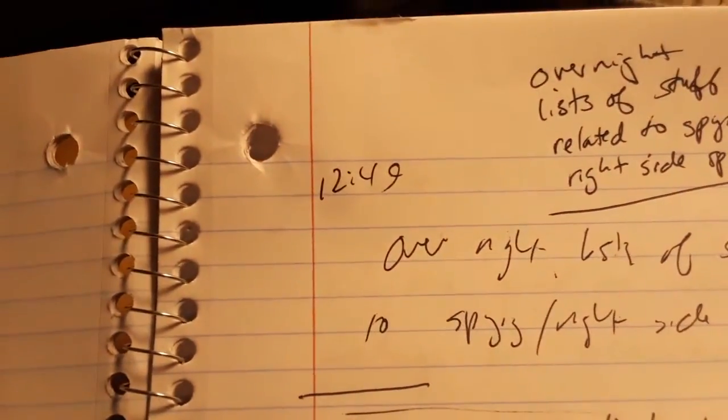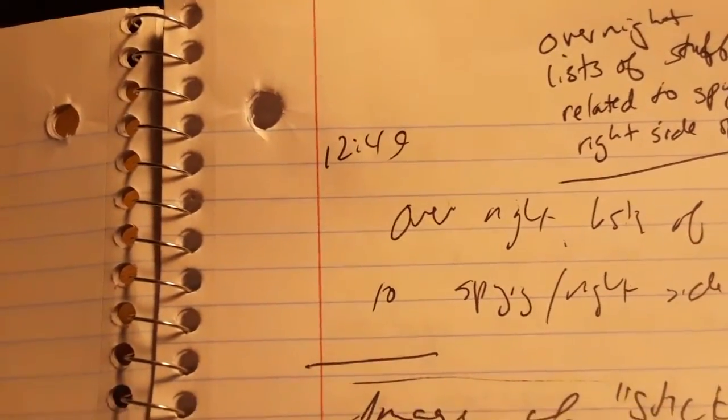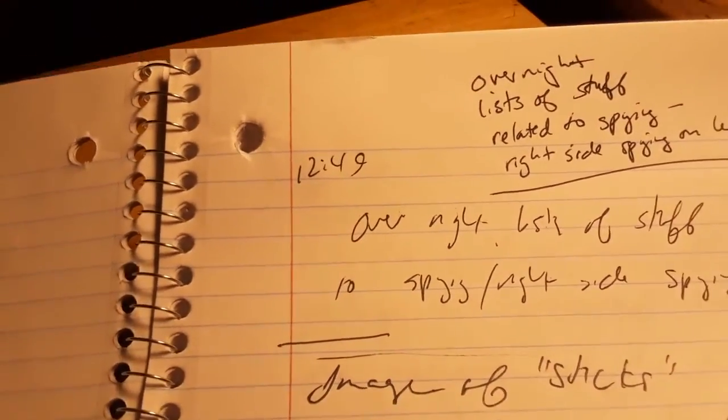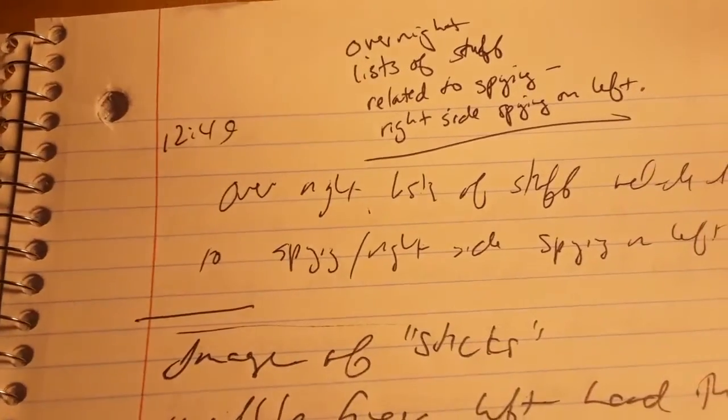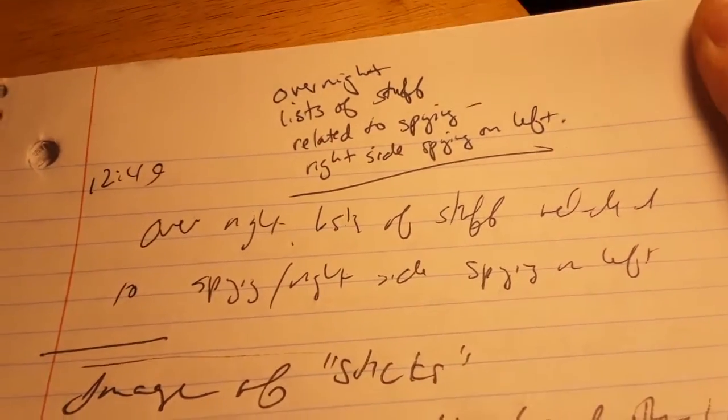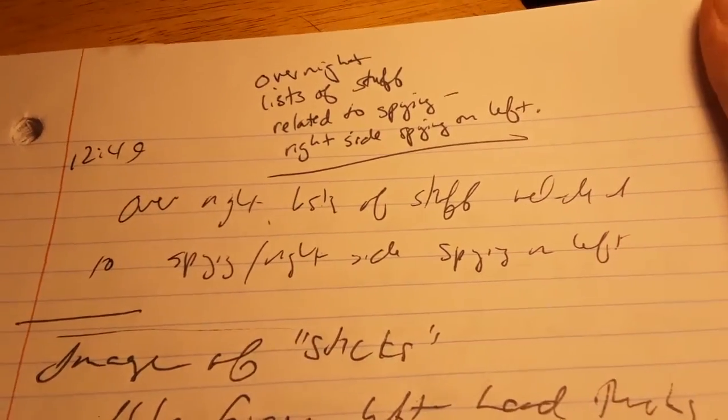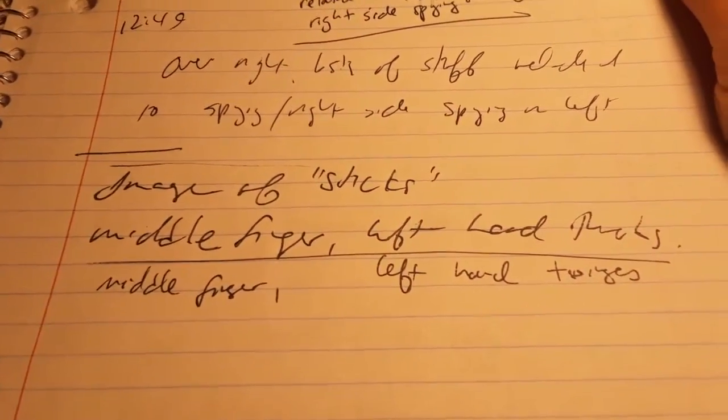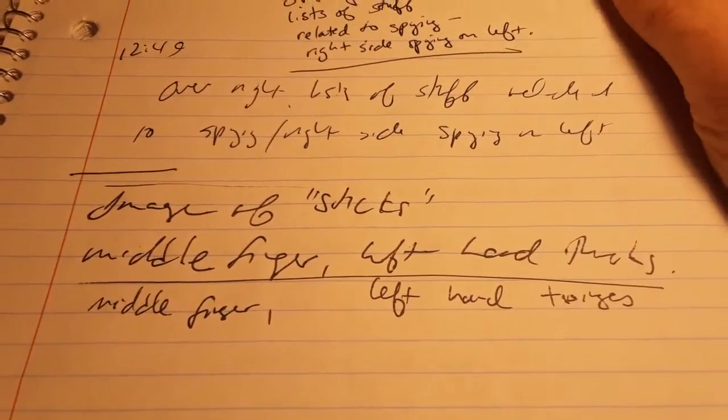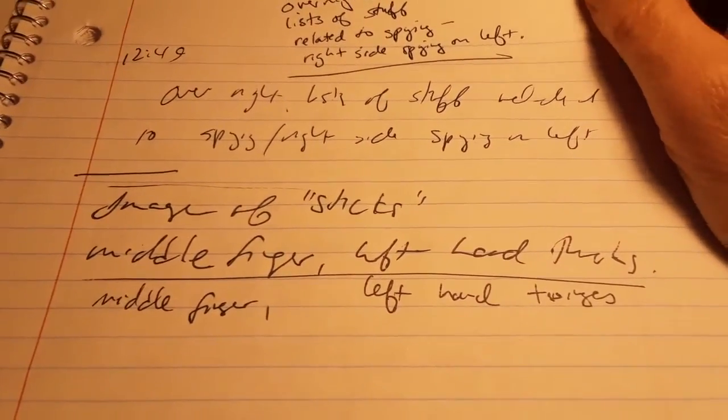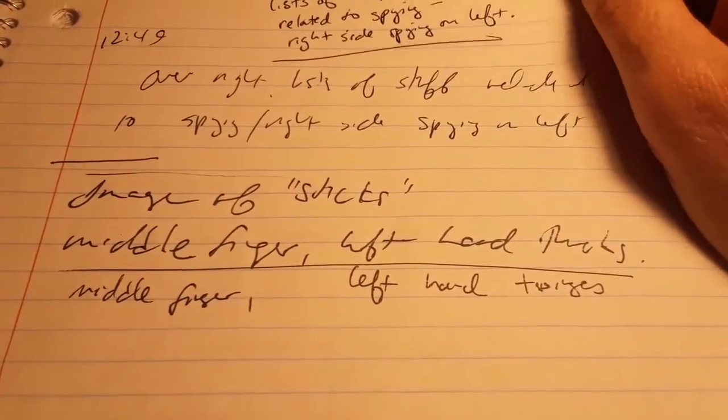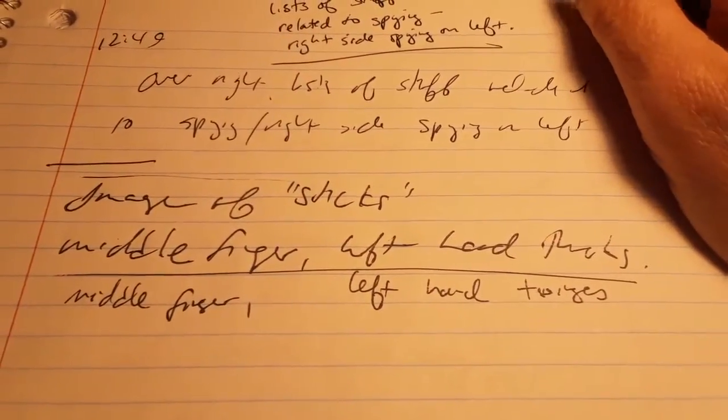Overnight - lists of stuff related to right side spying on left. I think I wrote overnight because it was like throughout the night - lists of stuff related to spy, right side spying on left. And then as I was waking up, because I think partly because not much had come from the dreams or anything, I get this image of sticks, like a vision of sticks, and at the same time the middle finger on my left hand was twinging.